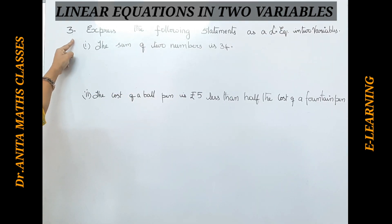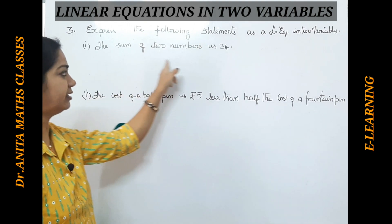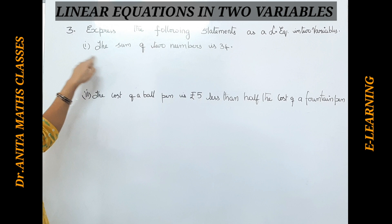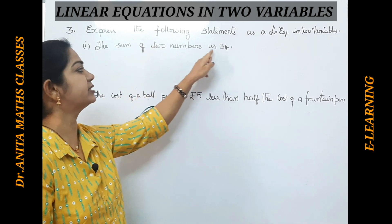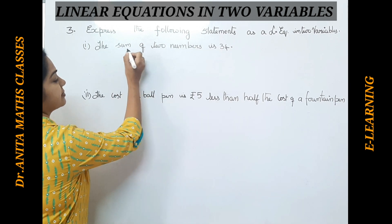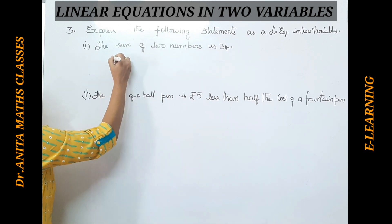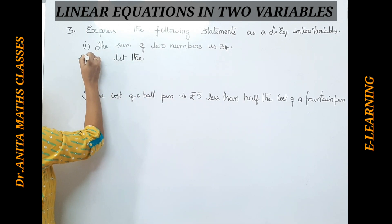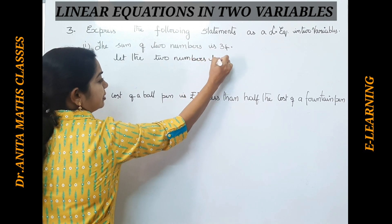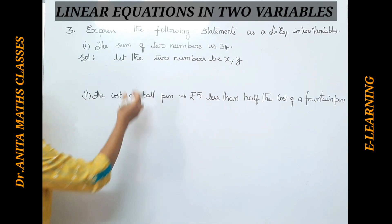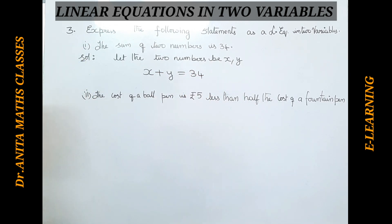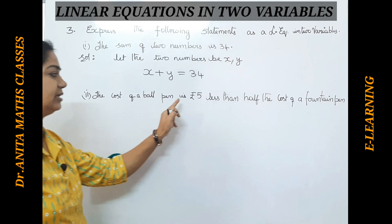The next question asks: express the following statements as a linear equation in two variables. We are given verbal statements and must write them in mathematical form. For the first one — the sum of two numbers is 34 — we suppose the two numbers be x and y. Sum means addition, so the equation is x + y = 34. This is the required linear equation.